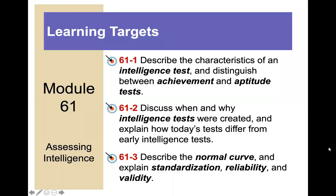The learning targets for this module are: to describe the characteristics of an intelligence test, distinguish between achievement and aptitude tests, discuss when and why IQ tests were created, explain how today's tests differ from early intelligence tests, and understand the normal curve, standardization, reliability, and validity.